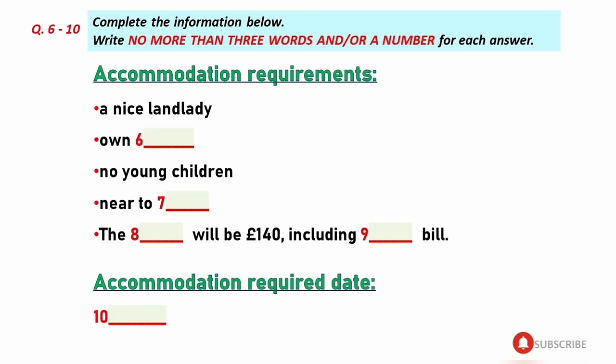Now listen carefully and answer questions 6 to 10. Well, Aaron, can you tell me your requirements about homestay, such as food or facilities, something like that? Yes. Firstly, I prefer to live in a homestay house with a nice landlady and I hope she would be good at cooking. How about others? And I'd like to have my own bathroom and balcony. I don't want to share with others.